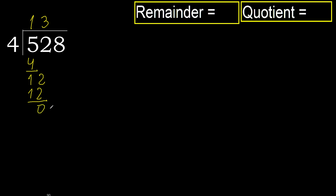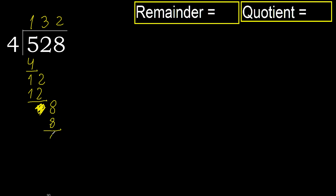Next, eliminate. 0 here. 8. 4 multiplied by 2 is not greater. Subtract.